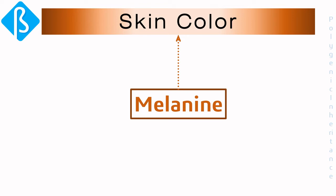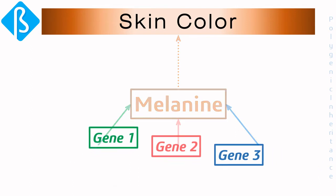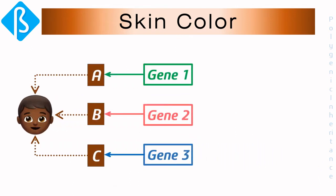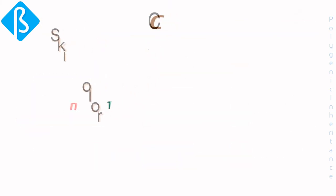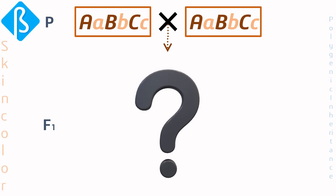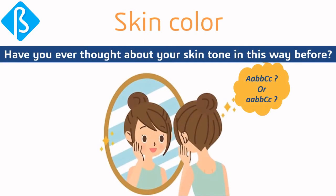We know that the pigment melanin is responsible for the dark color of skin, and there are three different genes controlling human skin color. Let's assume A, B, C are contributing alleles that produce melanin giving a dark skin tone, and a, b, c are non-contributing alleles giving a light skin tone. If two heterozygous parents give rise to a baby, there are 64 possible allele combinations, showing seven different skin tones.